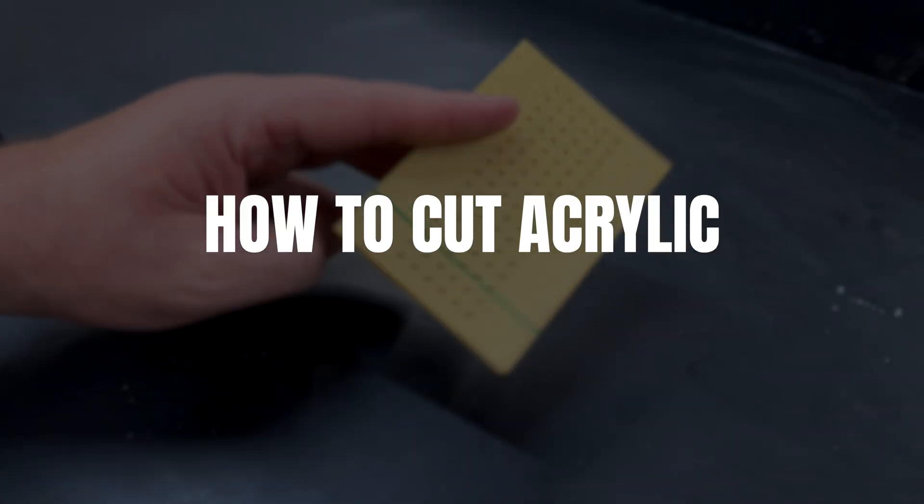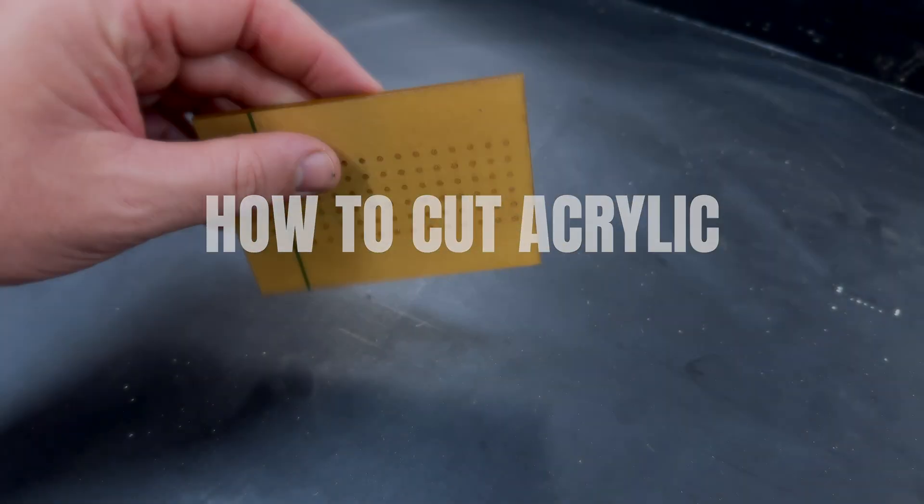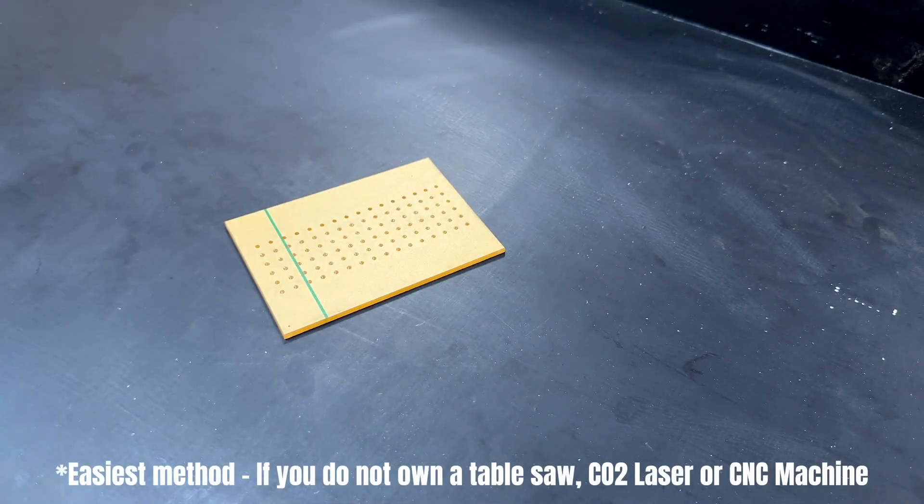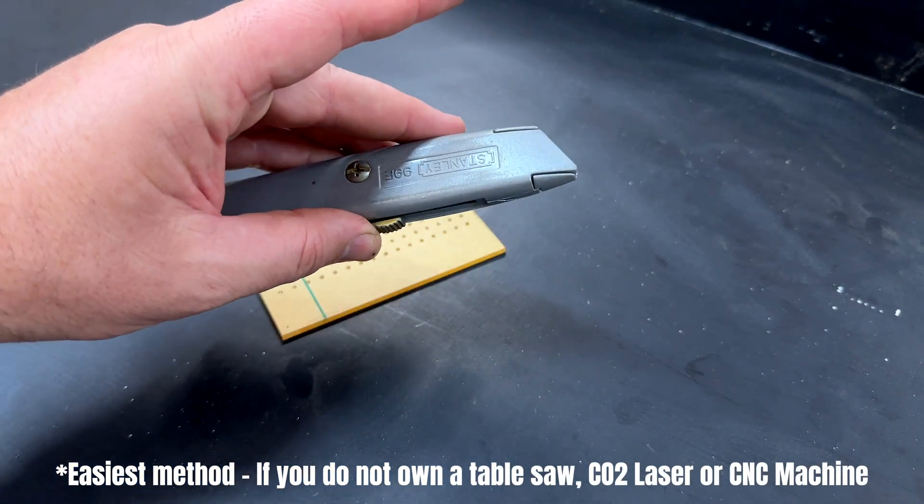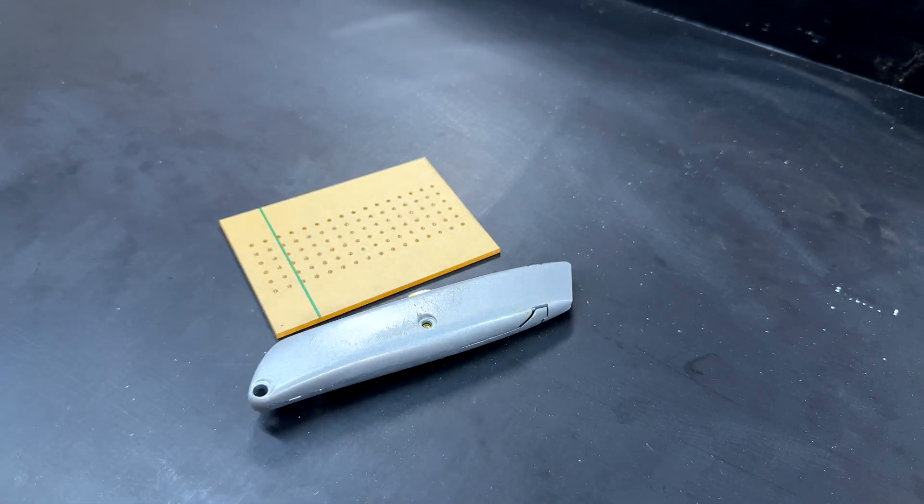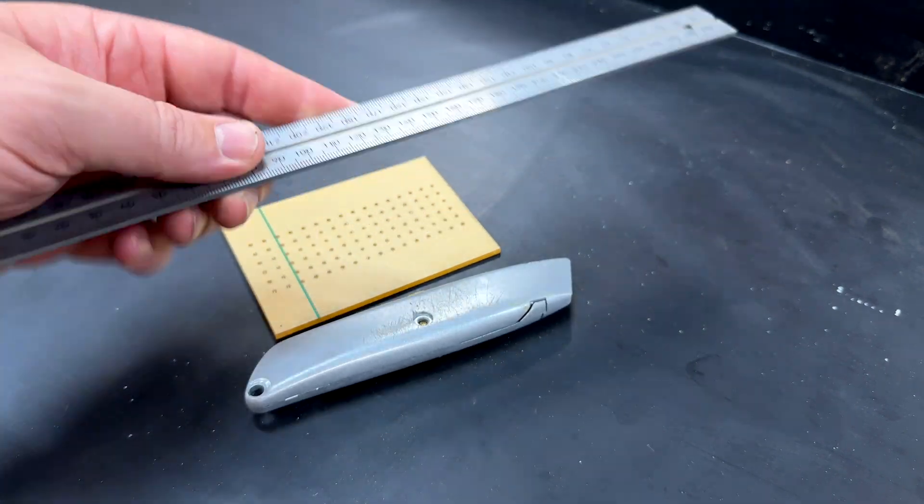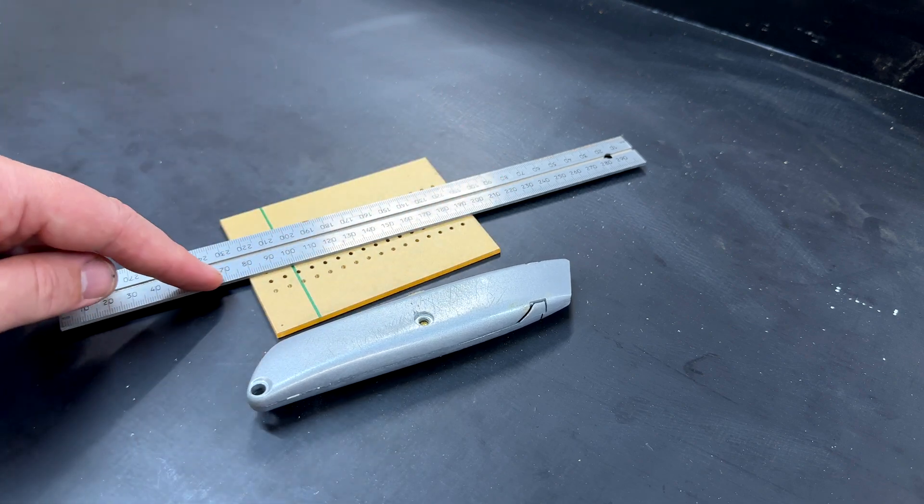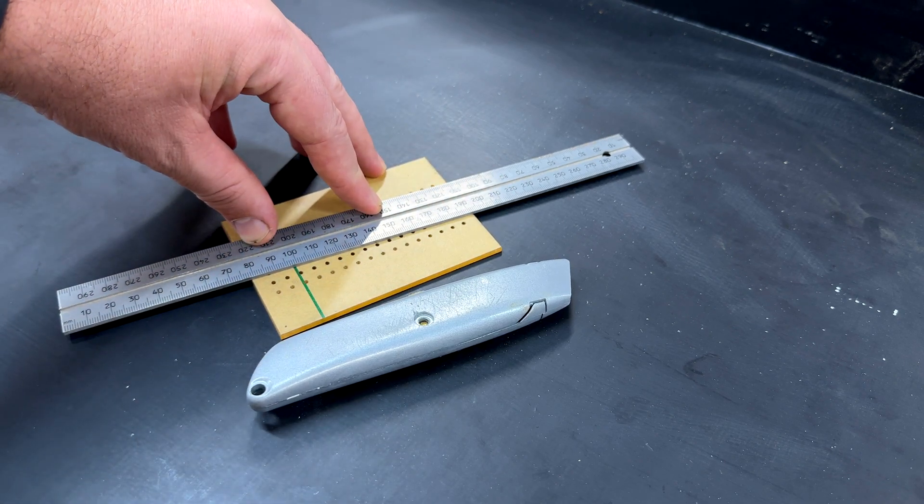The easiest way to cut acrylic like this which has still got its backing on is to use a utility knife like this. Now to do that safely you're going to need a steel ruler similar to this one and that's going to help you guide the blade and keep your fingers safe as well.